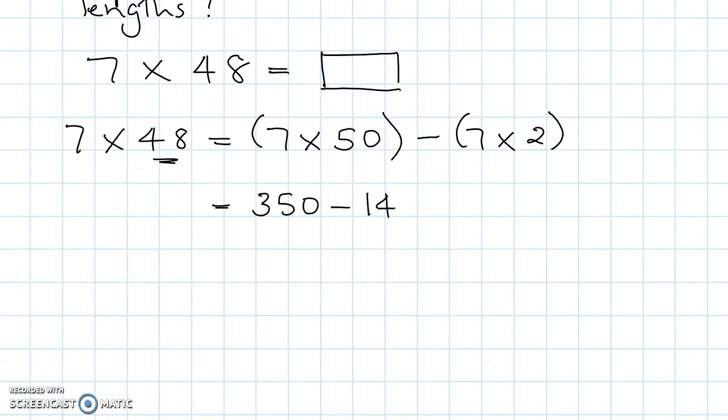Okay. 350 take away 14. All right. We can't figure it out easily. Use place value. 350 take away 10, take away 4. So that 14 is split into 10 and 4.